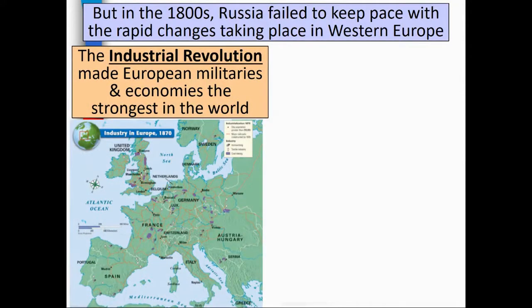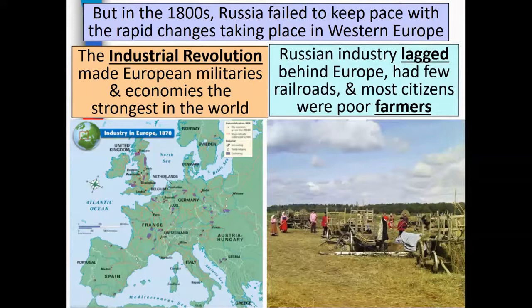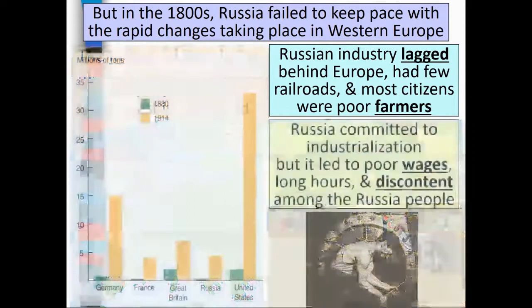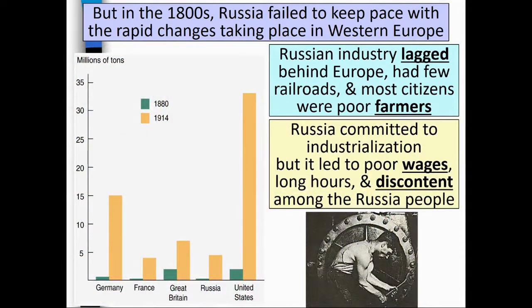The Industrial Revolution made European militaries and economies the strongest in the world. Russian industry lagged behind Europe — it had few railroads and most citizens were poor farmers. Russia committed to industrialization, but it led to poor wages, long hours, and discontent among the Russian people.